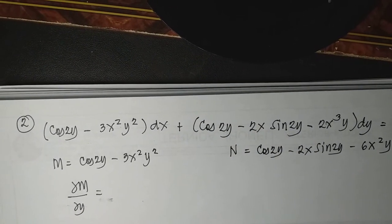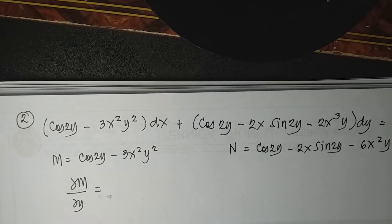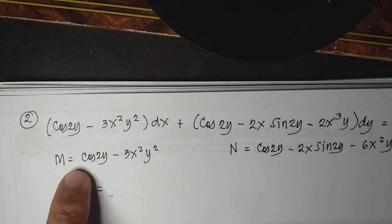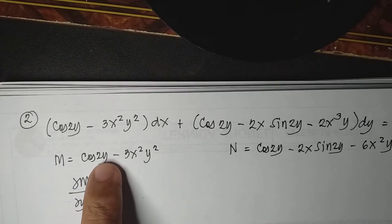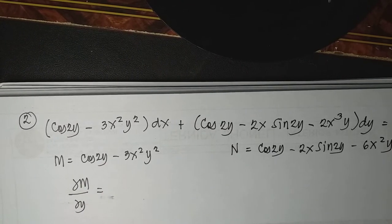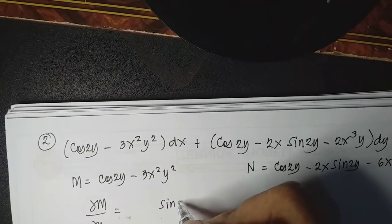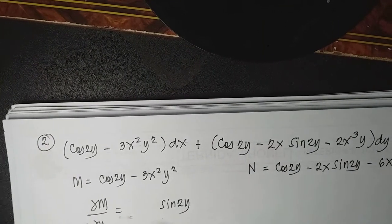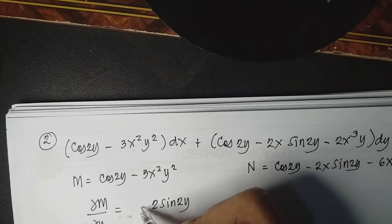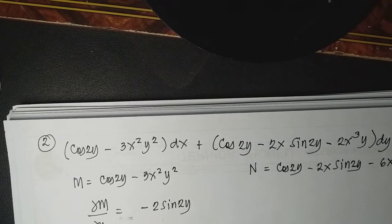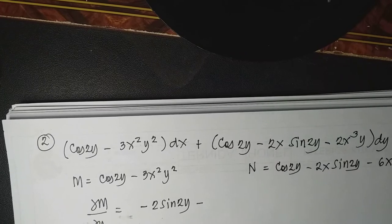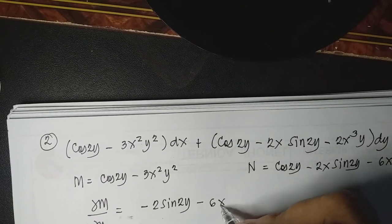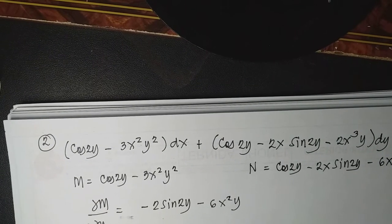Differentiating cos 2y: this is of the form cos u where u equals 2y. The derivative of cos u is negative sin u, and du equals 2 dy, so the derivative gives negative 2 sin 2y. Differentiating negative 3x²y² in terms of Y gives negative 6x²y. So the derivative of M in terms of Y is negative 2 sin 2y minus 6x²y.